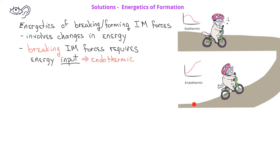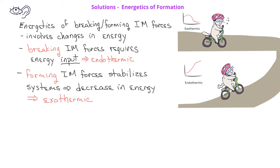Much as the cat is going uphill in an energetic cycle. Forming intermolecular forces tends to stabilize a system. This results in a release of energy in what we call an exothermic process. Exothermic processes lead to a decrease in the overall energy, much like the cat on the cycle going downhill.